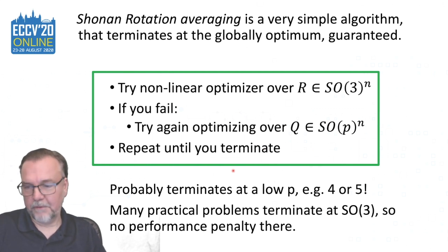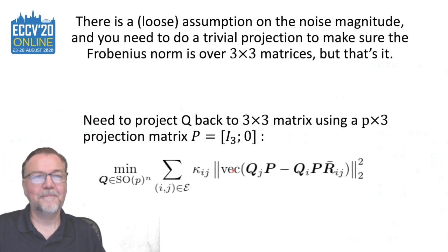Many practical problems actually terminate at SO3, so the only performance penalty is calculating the eigenvalue. There is an assumption on the noise magnitude. It has to be smaller than a certain threshold and there is a technicality that we have to project with a certain P matrix back to 3x3 matrices to take the Frobenius norm.